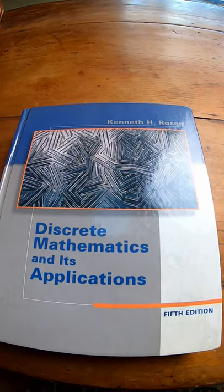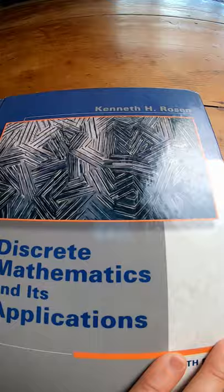This is the Rosen book on discrete math. It's probably one of the most popular discrete math books being used today in the US. It's a pretty good book.